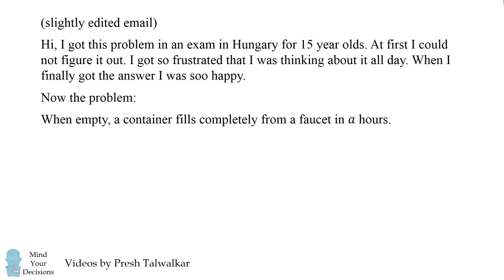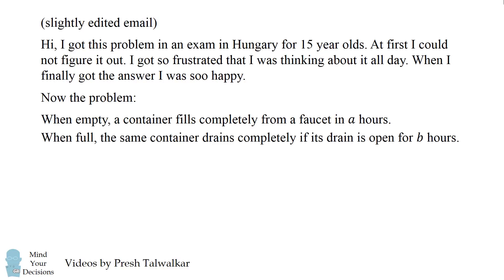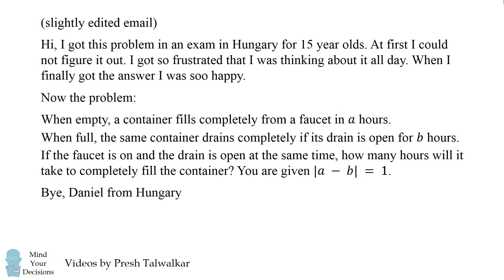Now the problem. When empty, a container fills completely from a faucet in A hours. When full, the same container drains completely if its drain is open for B hours. If the faucet is on and the drain is open at the same time, how many hours will it take to completely fill the container? You are given that the absolute value of A minus B equals 1. By Daniel from Hungary.